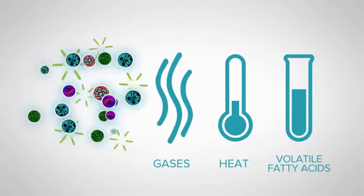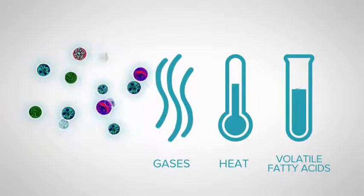The microbes then use these simple sugars as an energy source, and in doing so, produce waste products. These waste products include gases, heat, and volatile fatty acids.